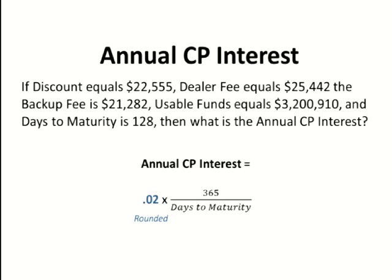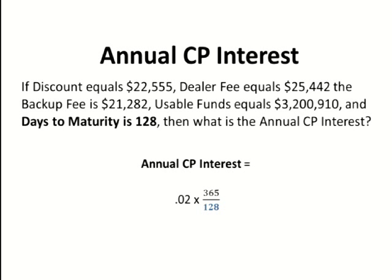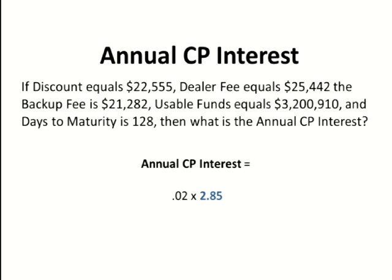We encourage you to calculate as you go — it makes it a lot easier. That would be approximately 0.02 rounded. Keep in mind that rounding will affect your final answer; sometimes it's best not to round and go a few more decimal places. Then, of course, the days to maturity: 128.